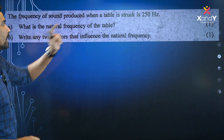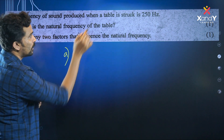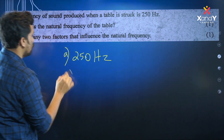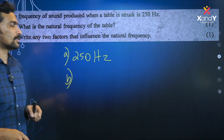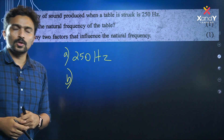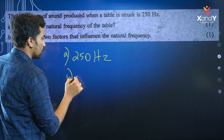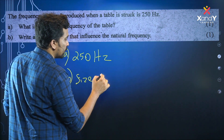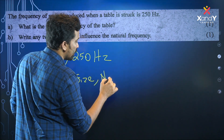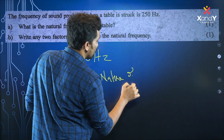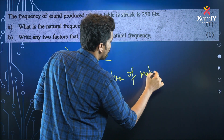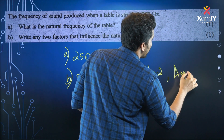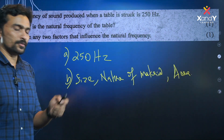What is the natural frequency of the table? The answer is 250 Hz. Write any two factors that affect natural frequency. The factors are: size of the material, nature of material, and length — these affect the natural frequency.